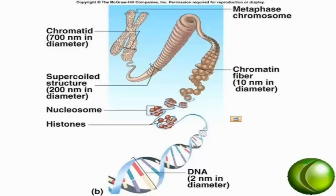Before the cell divides, it is in a state called interphase. Interphase is the phase of the cell cycle between divisions. During interphase, the cell has to do something to get ready to divide and make sure that the division results in two identical cells replacing the original cell. In order to do that, it has to duplicate all of its genetic material, so that each new cell gets a full complement of the genetic material necessary for that cell to exist and function as the original parent cell did. Those two cells that result are called identical daughter cells.